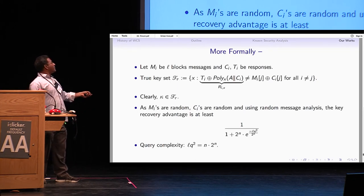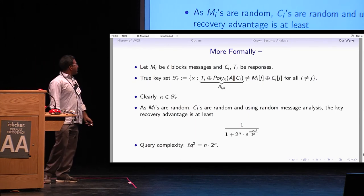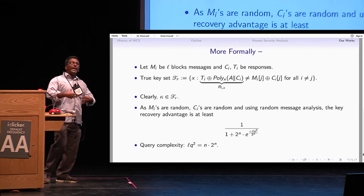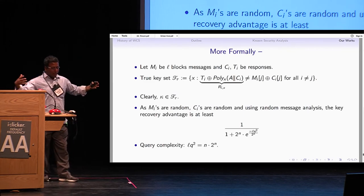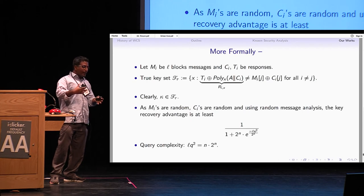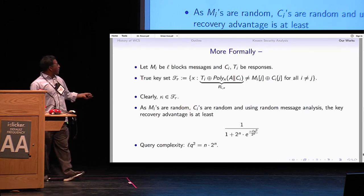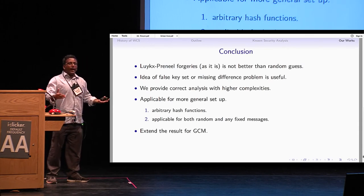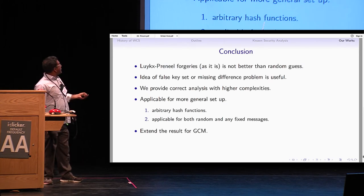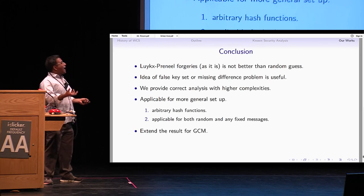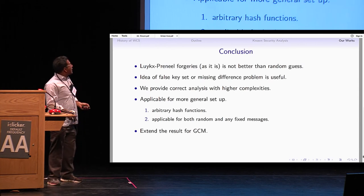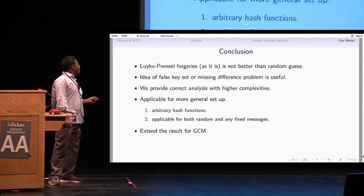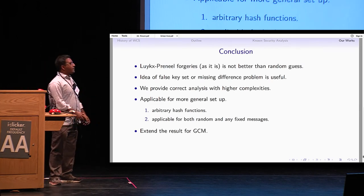In conclusion: the Lucks-Pinnets forgery does not give anything better than a random guess, but the false key set idea is important. Taking that idea — the false key set approach, which is also the dual of the missing difference problem — I prove that the Bernstein bound is tight. The result holds for arbitrary hash functions, applies to both random and fixed messages, and extends to GCM. Thank you.